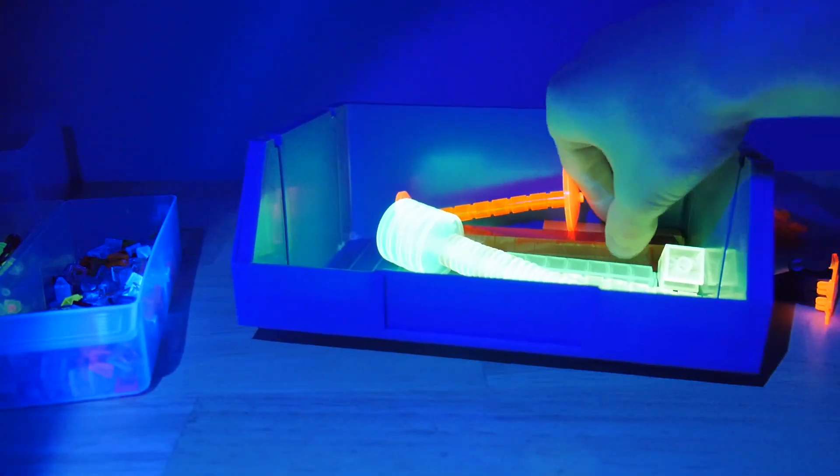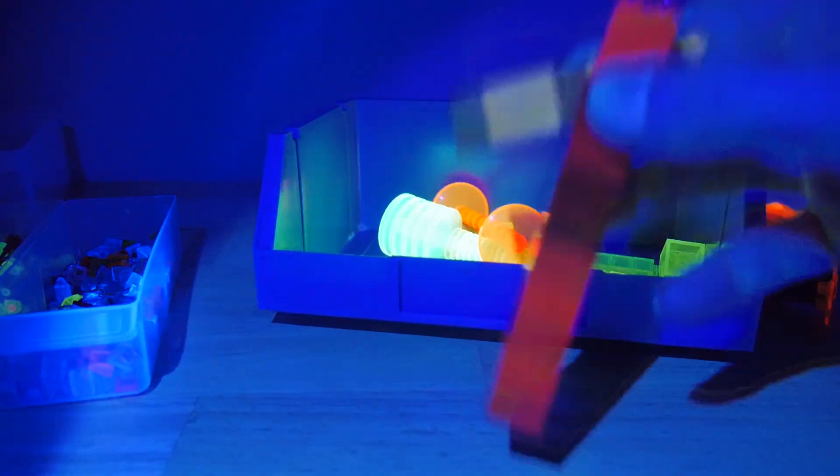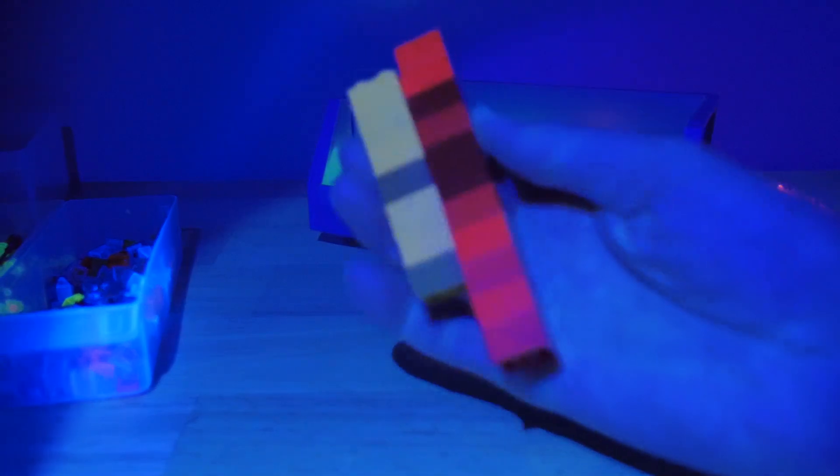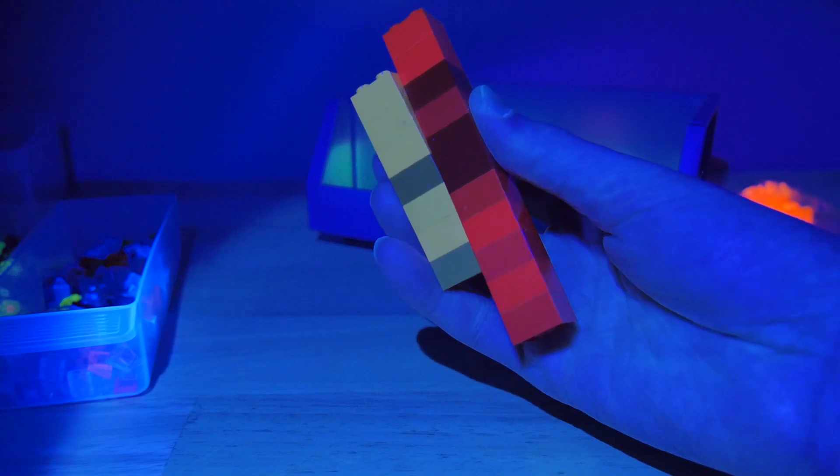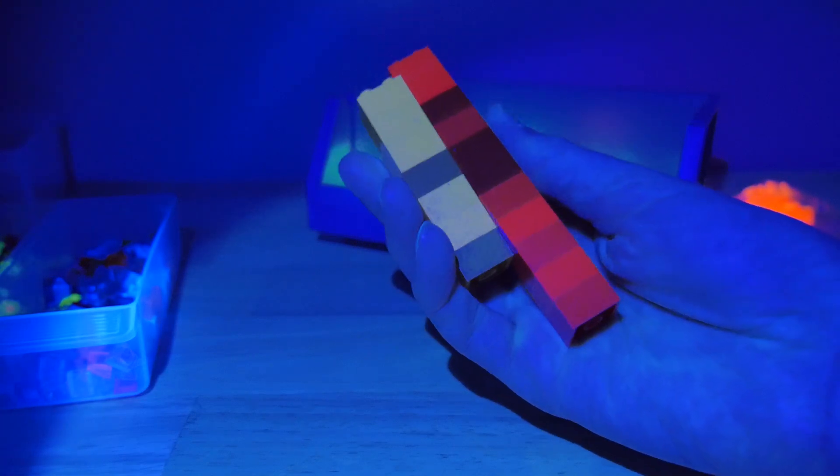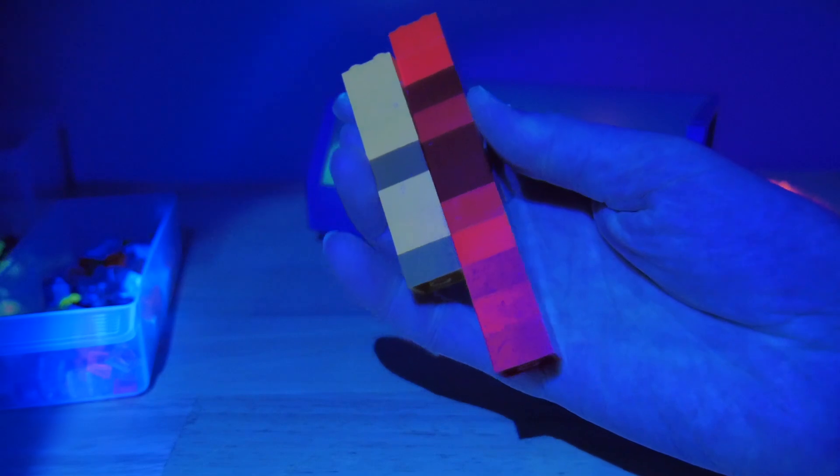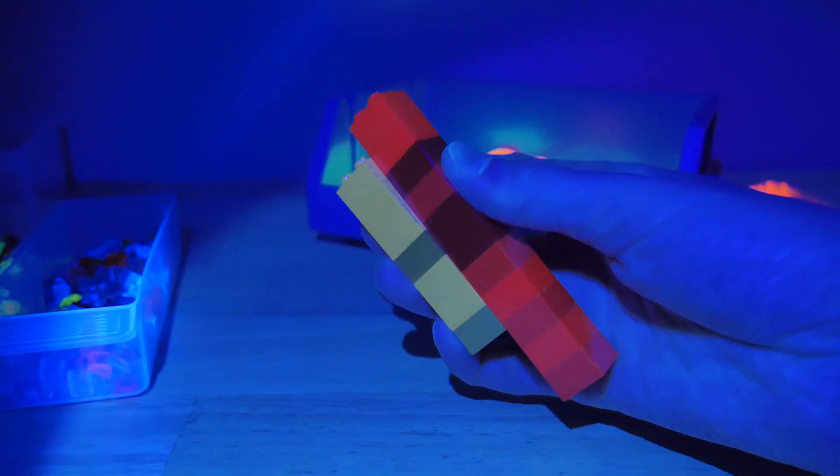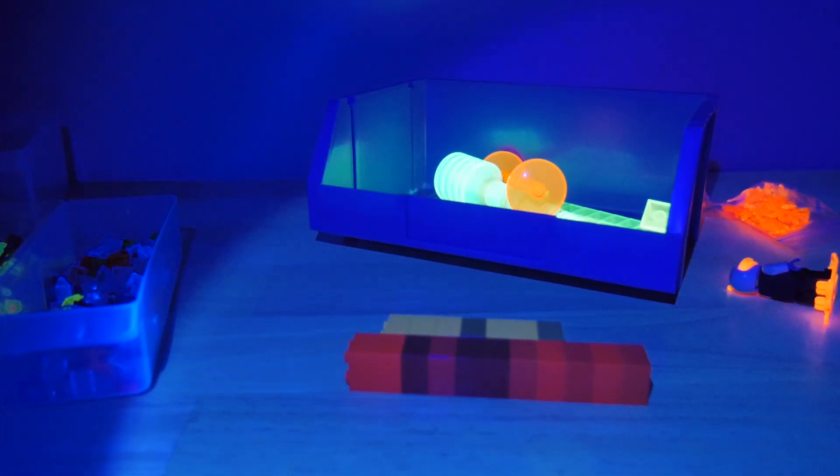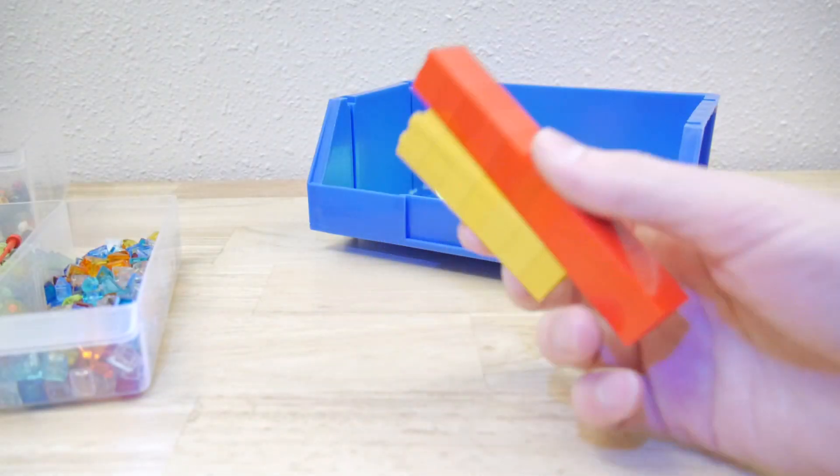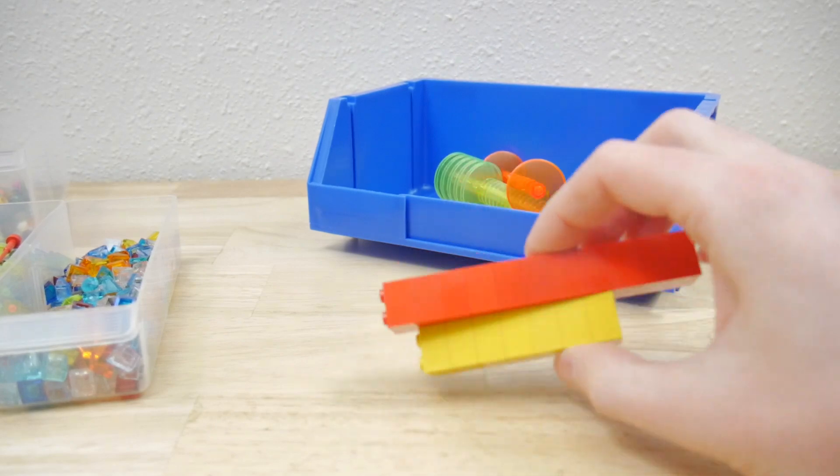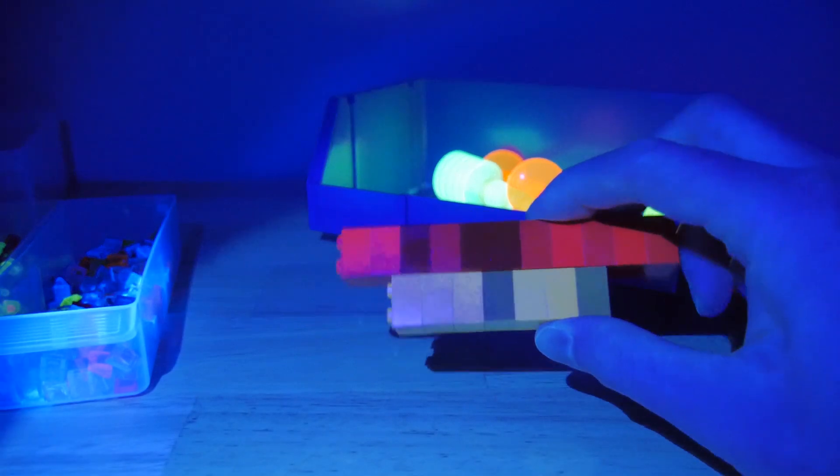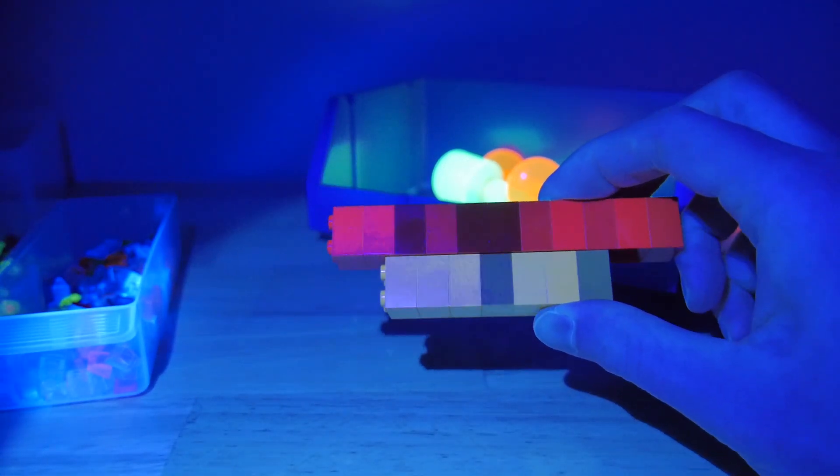Alright, one more example I want to show is another way to tell some new versus old pieces apart. So these are just red and yellow pieces. And guess what? They look pretty normal. Can't really tell a lot of difference between them. But when you hit them with UV, well, some of them are dark and some of them are bright.